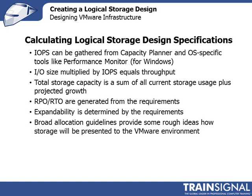Your RPO and RTO are going to be generated straight from your requirements analysis, based on information gathered from the business and key stakeholders, and signed off by the project team when you defined the four design factors: requirements, risks, assumptions, and constraints. The broad allocation guidelines will give rough ideas of how you're going to take the storage and present it to the VMware environment — for example, presenting a total of 25,000 IOPS and three terabytes and then carving those up.